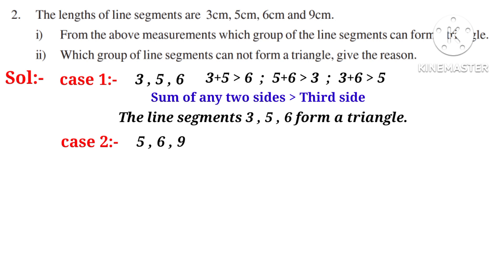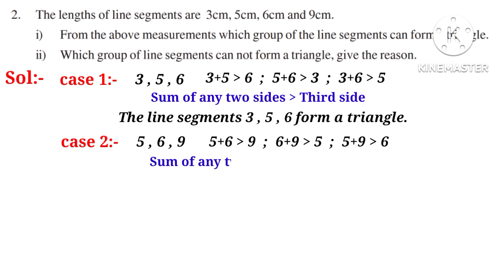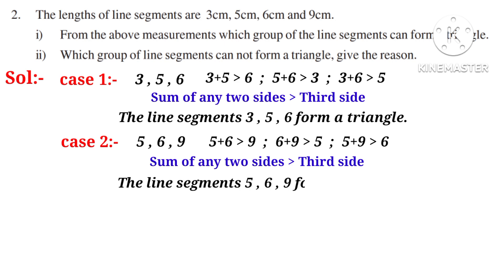Case 2: take 5, 6, 9. Observe that 5 plus 6 is greater than 9, 6 plus 9 is greater than 5, and 5 plus 9 is greater than 6. That is, the sum of any two sides is greater than the third side. So the line segments 5, 6, 9 can form a triangle.